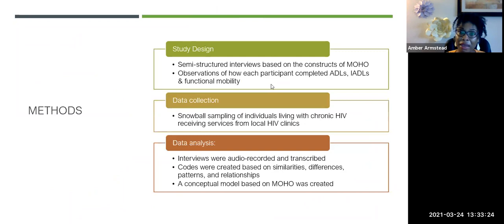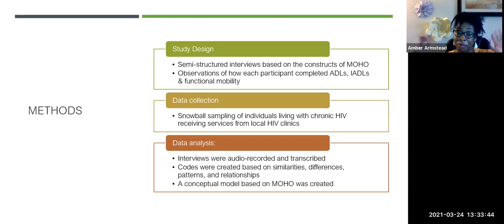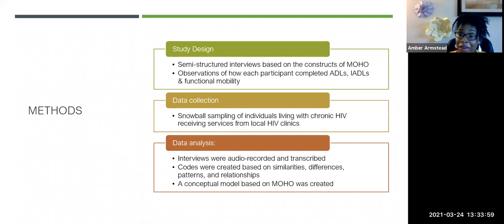My participants were really happy to talk to me, and I believe that's partly because I was a Black woman — they were telling me their life stories, things they probably wouldn't have shared otherwise: how they contracted the virus, stories of sexual assault and trafficking. My design was qualitative: semi-structured interviews based on the constructs of MOHO. I used snowball sampling, posted flyers at HIV clinics around the Houston area, offered a $5 gift card, audio-recorded the interviews, had them transcribed, coded them, and had my mentor code them as well to verify accuracy.